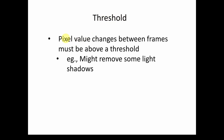A threshold requires pixel value changes between frames to be above a certain level. This can remove light shadows — for example, if a car passes by with shadows underneath, those pixels get darker and are assigned dark gray or light gray values in the background subtractor. So this threshold can hopefully get rid of auto exposure effects when the image gets brighter, or shadows, and those kinds of things.